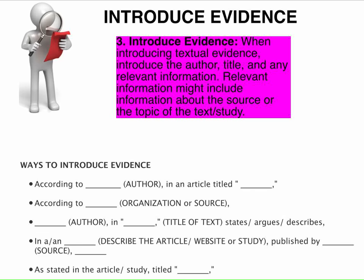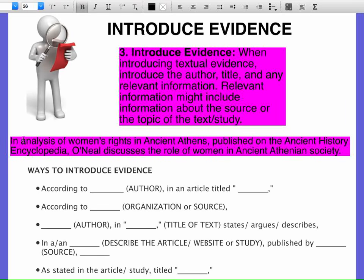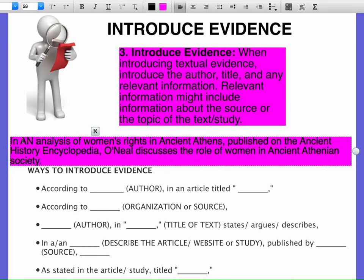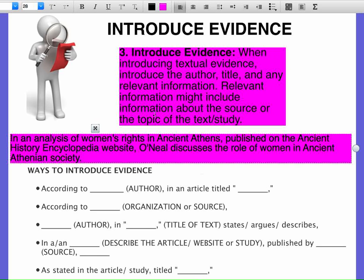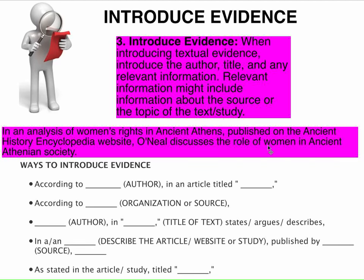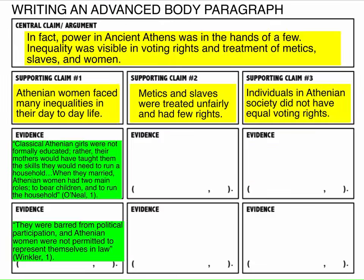Now I'm going to introduce my evidence. When I introduce my evidence, I might give you the author or the title and any relevant information. That might include information about the source or the text of study. Here are some examples of how to introduce your evidence, which can also be found at the bottom of your Schoology page. I'm going to choose my first piece of evidence — I'll take a look at the form and decide which one I think is best to talk about first.